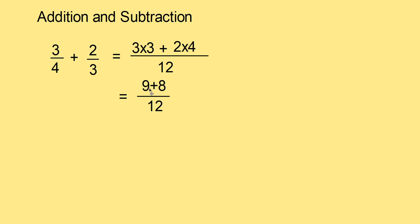You get 3 threes are 9, 2 fours are 8. So it is numerator is 9 plus 8 divided by 12. And the answer is 17 by 12. The same way we can subtract also.